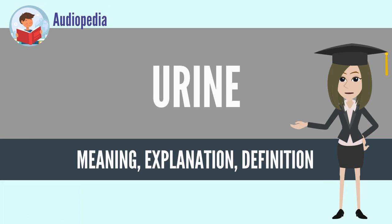Urine is a liquid by-product of metabolism in humans and in many animals. Urine flows from the kidneys through ureters to the urinary bladder. Urination results in urine being excreted from the body through the ureter.